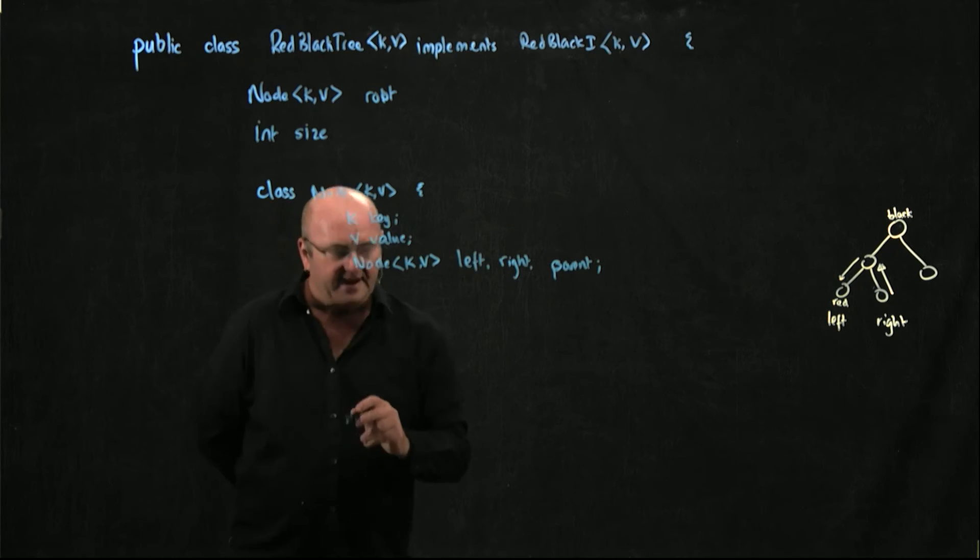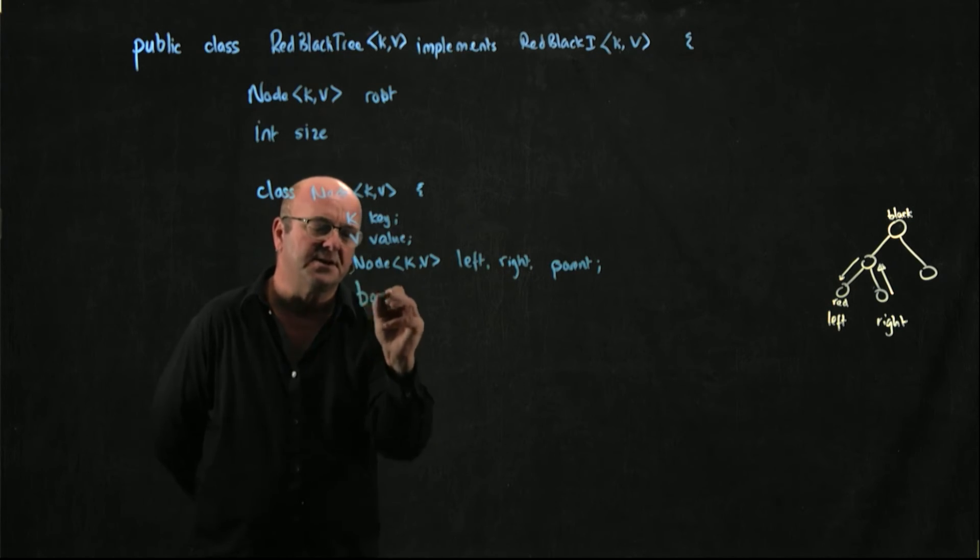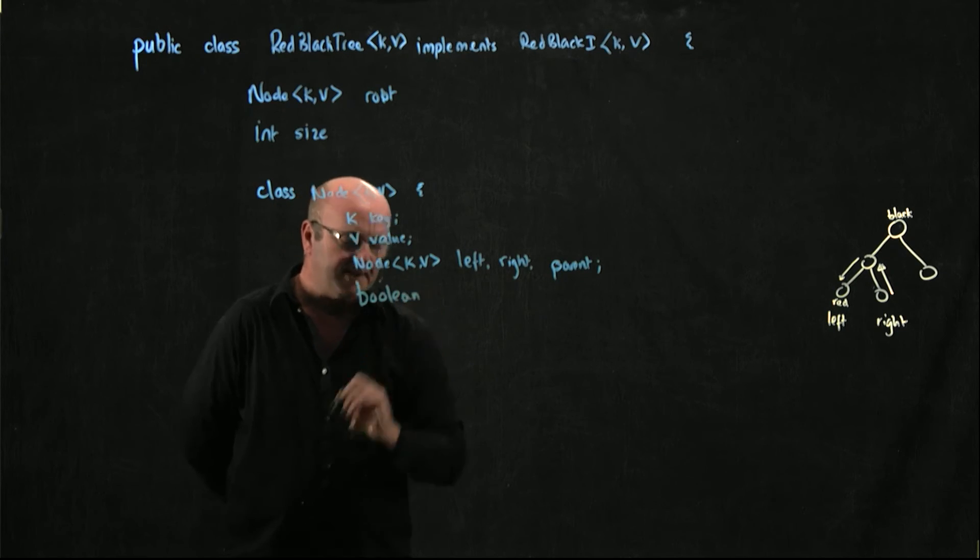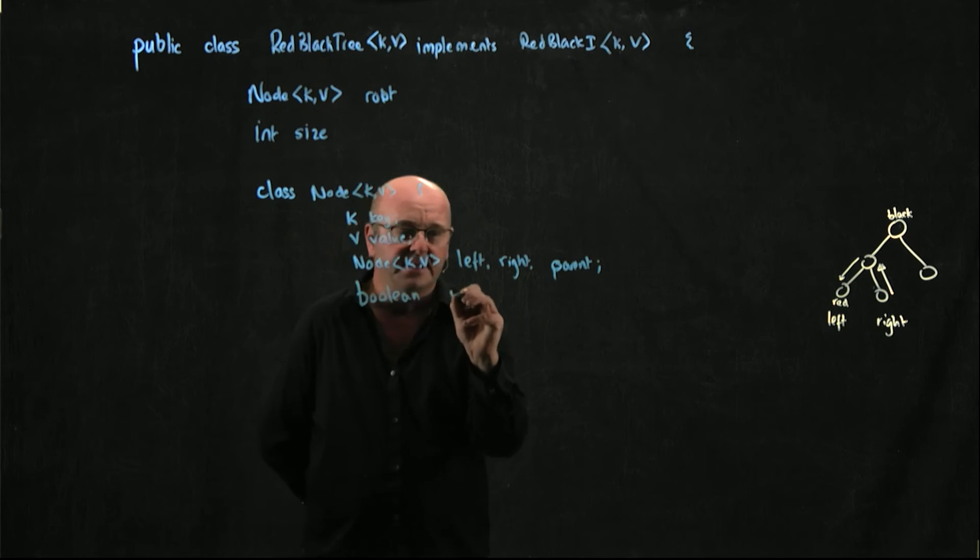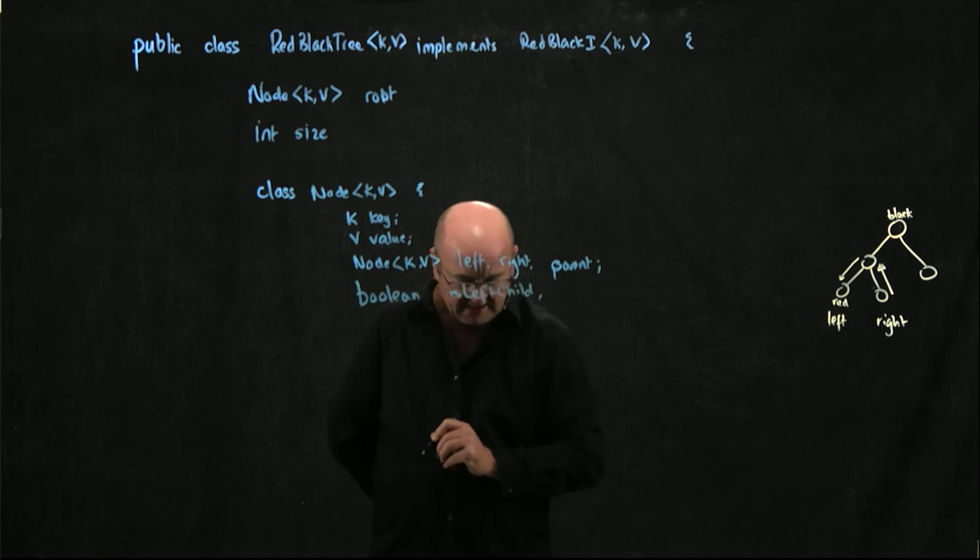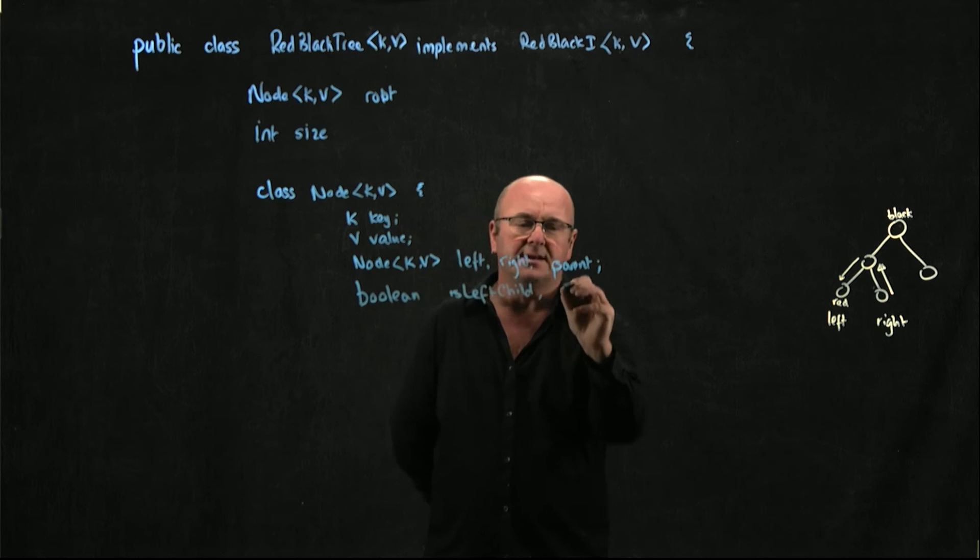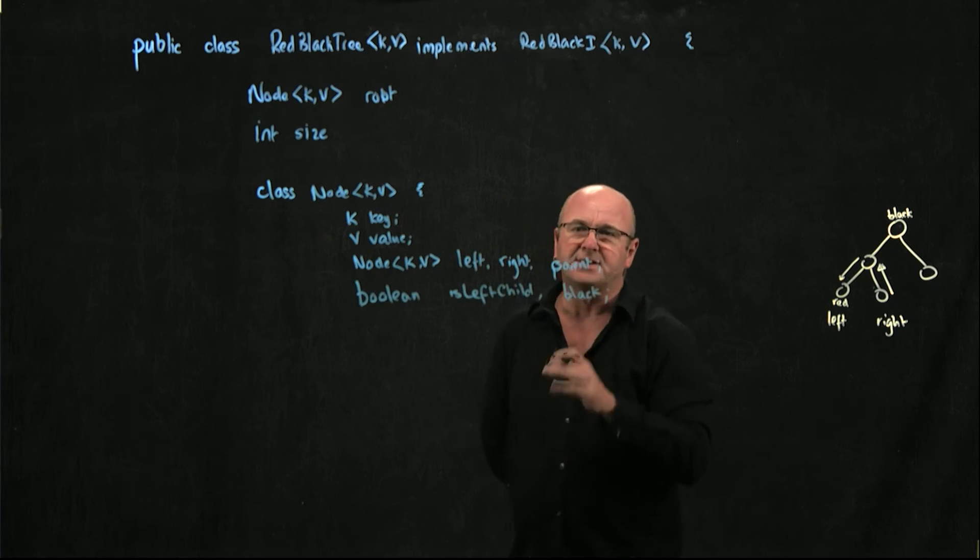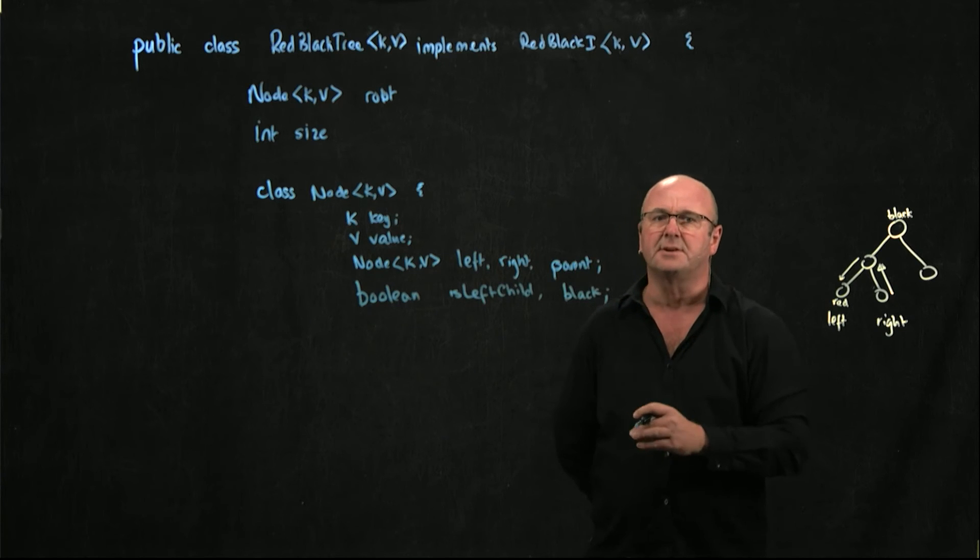Then, as I said, we're going to have two Booleans. The first Boolean is isLeftChild. The second Boolean is black. If that's true, the node's black. If it's false, the node is red.